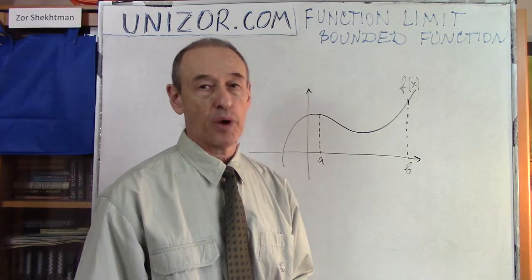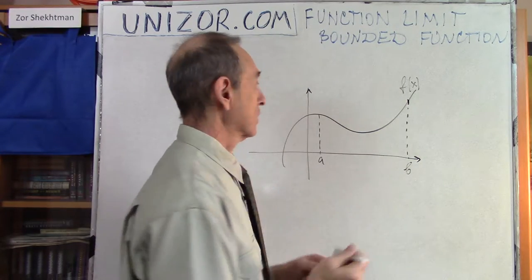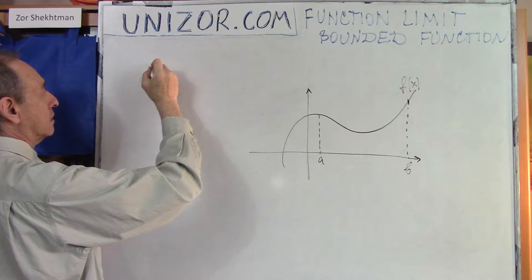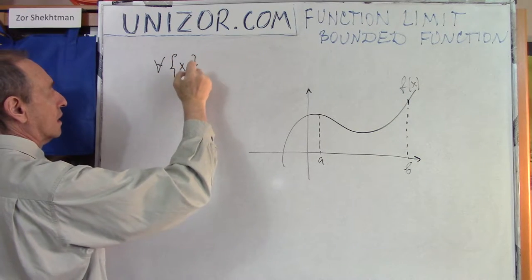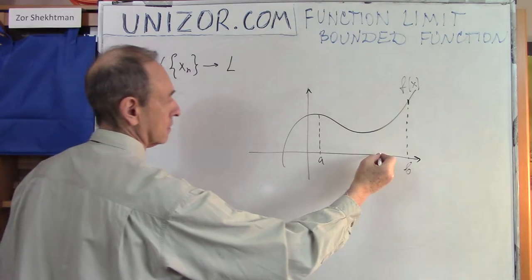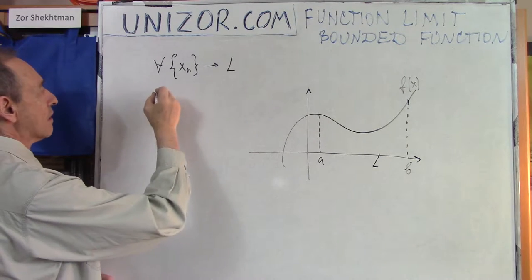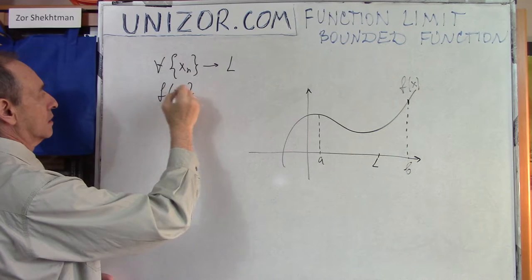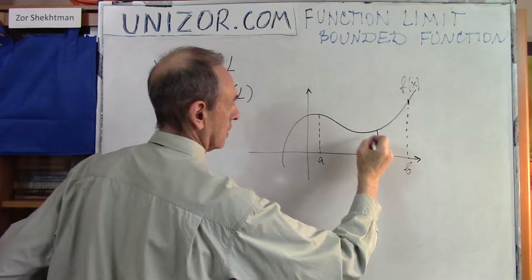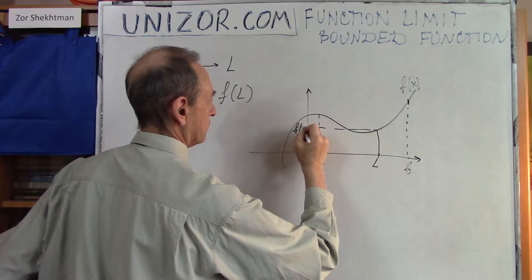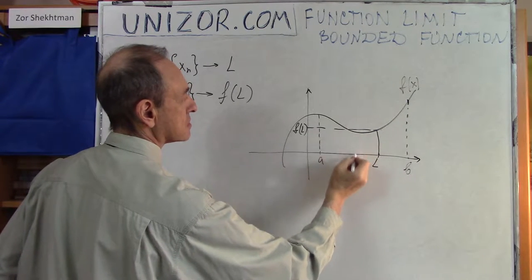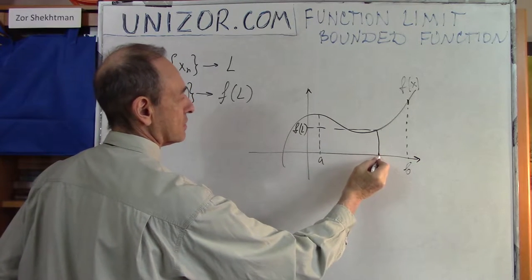Maybe it's appropriate just to remind you what a continuous function actually is. It's defined very simply: for any sequence of the arguments which is converging to some point l, which is its limit, the corresponding function of these arguments is converging to f of l. So whenever the argument converges to a point, the value of the function at these arguments is converging to the value of the function at the limit point.